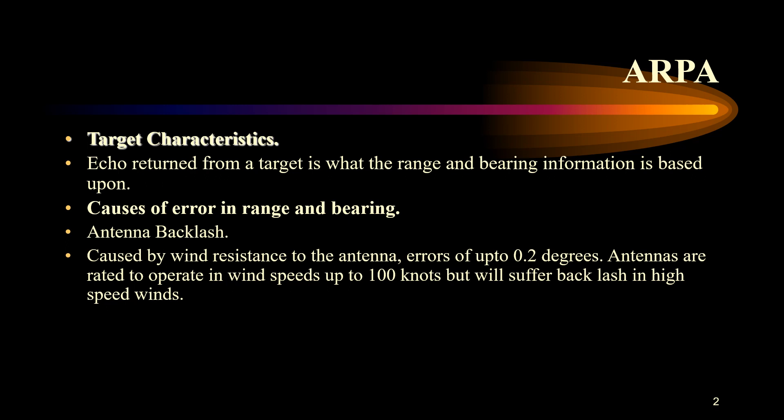The antennas are rated to operate in wind speeds up to 100 knots, but they may suffer a backlash effect at higher wind speeds. This will result in a difference between the actual bearing and the bearing calculated by the ARPA of about plus or minus 0.2 degrees. You may think this is a small figure, but sometimes it may be significant.